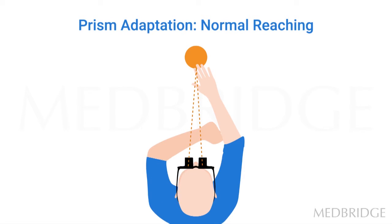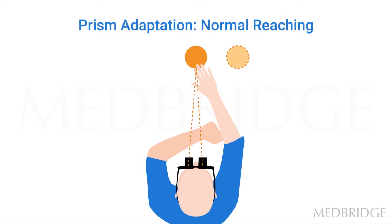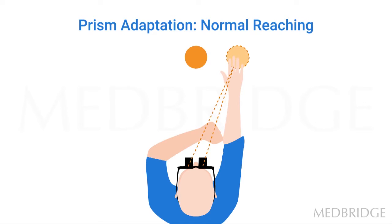When prisms are put on, the visual image is shifted to the left or to the right. And so when the person reaches, they actually reach to that visual image of the object, and of course they miss the object because the real object is to the left.